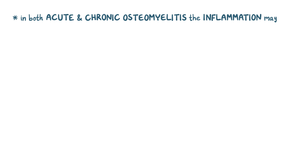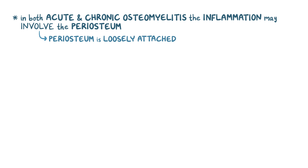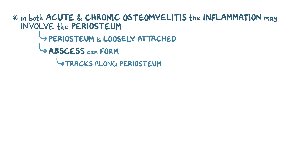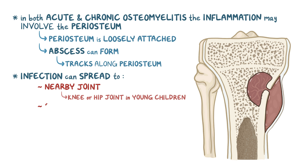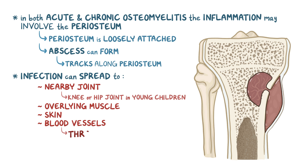Occasionally, in both acute and chronic osteomyelitis, the inflammation may involve the periosteum. The periosteum is loosely attached to the compact bone, especially in children, so the two layers can separate and allow an abscess to form between them. That abscess tracks along the periosteum, lifting it up away from the compact bone. The infection can also spread further to involve a nearby joint — particularly the knee or hip joint in young children — as well as overlying muscle, skin, and even get into the blood vessels, causing thrombophlebitis.